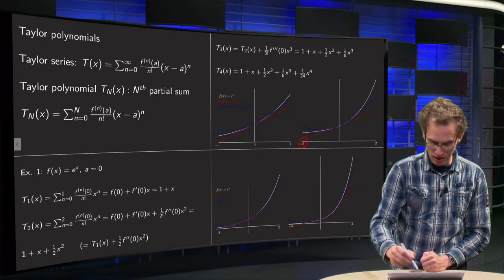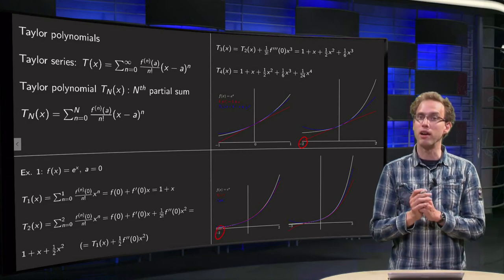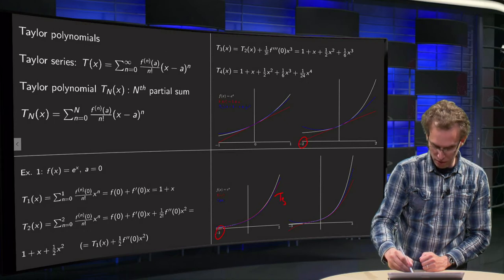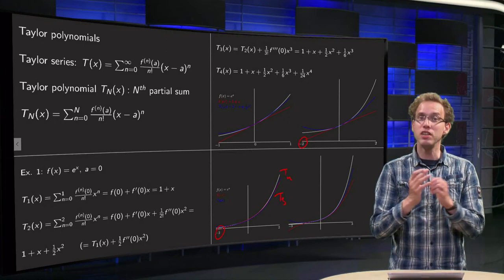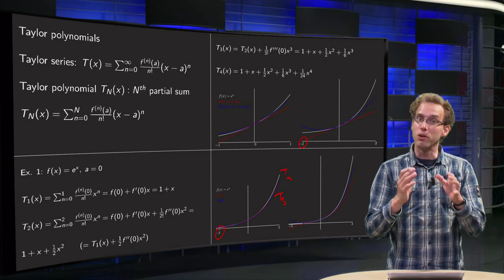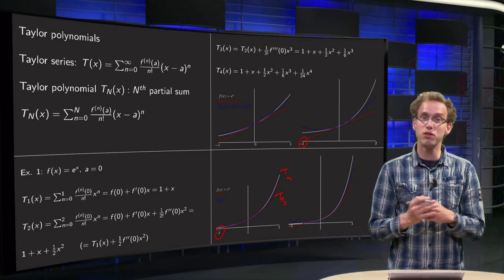So see the numbers of the x-axis here, minus two and two, are the same, and we plotted the T3 in red and the T4 in blue, and we see now that those functions approximate e to the power x pretty well, so you can use either your T3 or your T4.